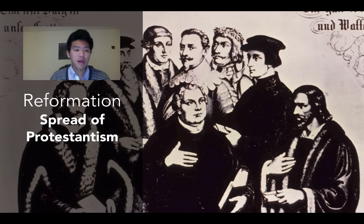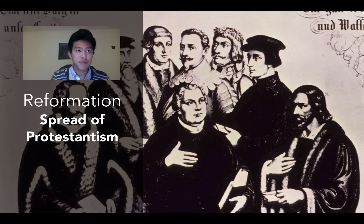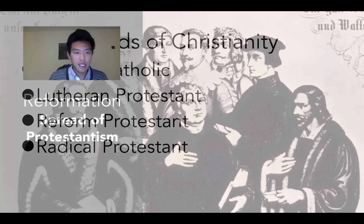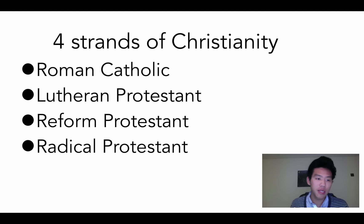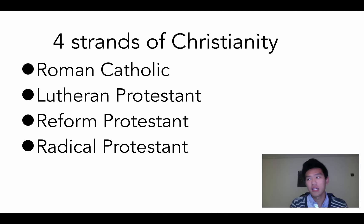Moving into the Reformation — how Protestantism continued to spread throughout Europe. We need to look at the different strands that come from the Protestant Reformation. I have a drawing of many of the different leaders: Philip Melanchthon, Martin Luther, Jan Hus, John Calvin. We'll be looking at reformed Protestants and radical Protestants. You really need to be able to compare and contrast the different doctrines, beliefs, and practices of each strand.